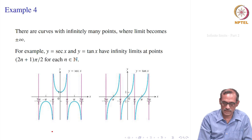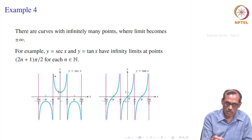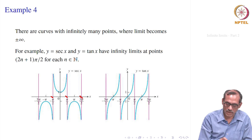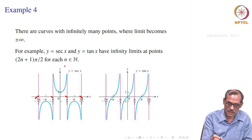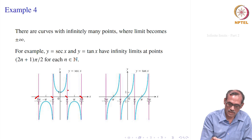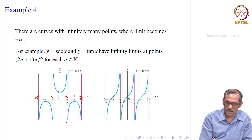Let us say y equal to sec(x). All these points x = -π/2, x = π/2, x = 3π/2, and on the other side -3π/2 — multiples of π/2 — the line x = π/2 becomes an asymptote here. As x goes to π/2 from the left, it touches the curve and y goes to positive infinity; it also touches the curve from the right, but those are different portions of the curve.